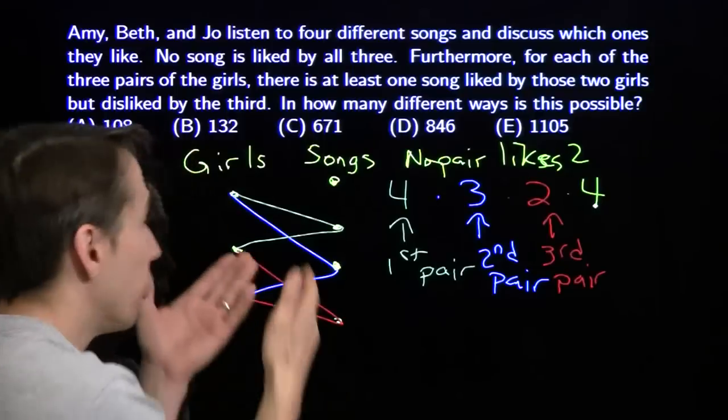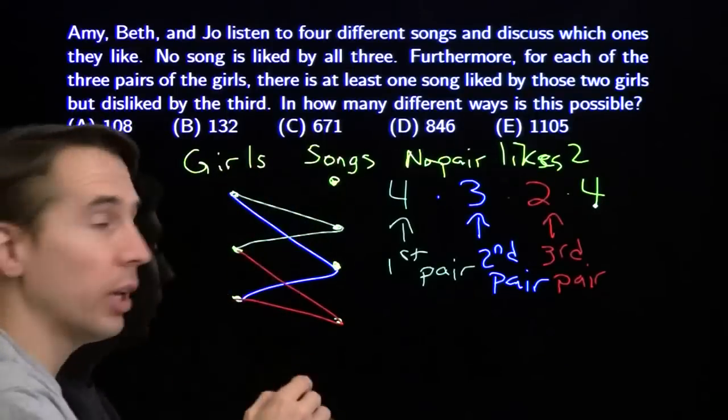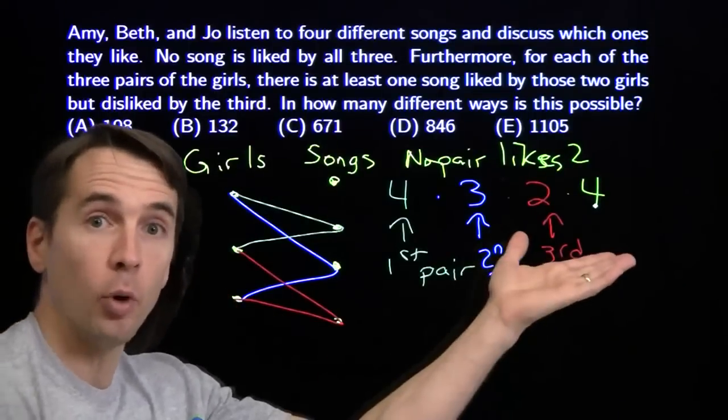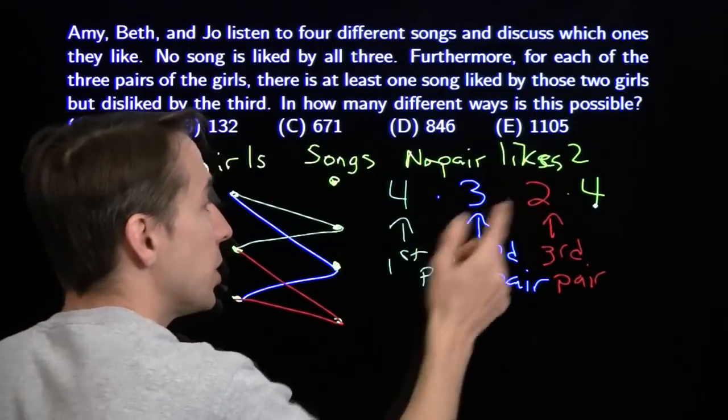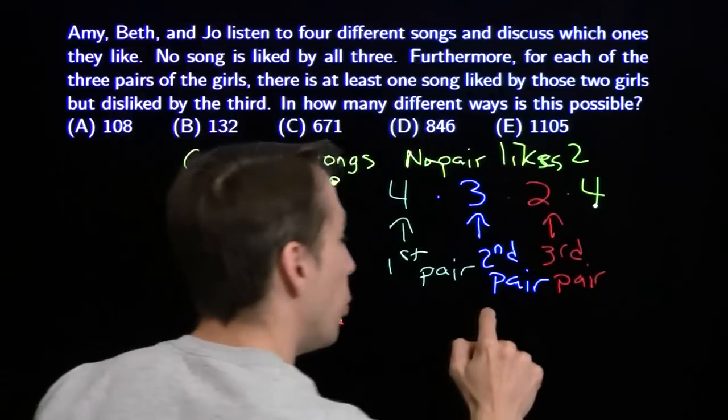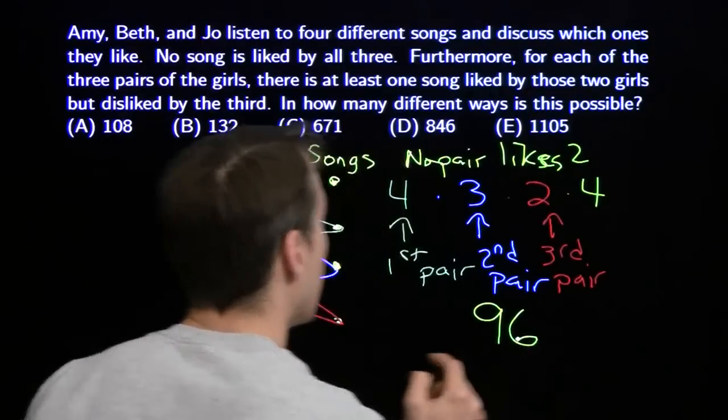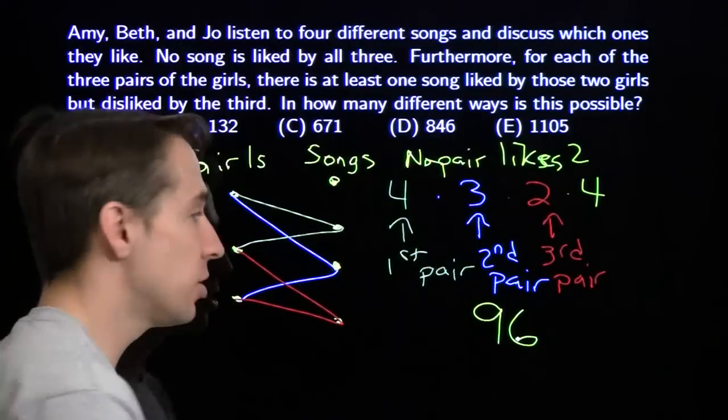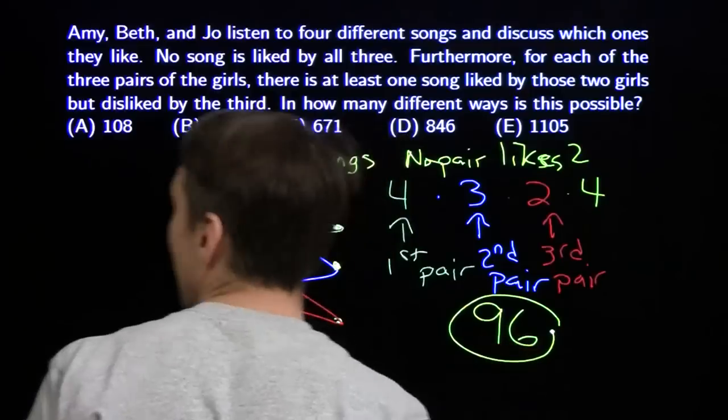So our final song has four options. And here we have no over counting, because there's no way two girls likes this song. It's either one girl, one of these three girls, or no girls at all. There are four possibilities. So we have four times three times two is 24, times four gives us 96 ways to allocate the girls to the song such that no pair likes two songs. So we get 96 in this case.